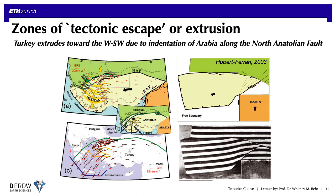A similar extrusion process is also invoked for the North Anatolian Fault System in Turkey. Arabia is considered the indenter in this case, the free surface is the Aegean Sea and the Hellenic subduction zone, and the extrusion is interpreted to be accommodated by the East Anatolian and North Anatolian left- and right-lateral fault zones.